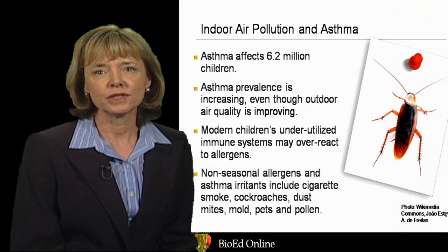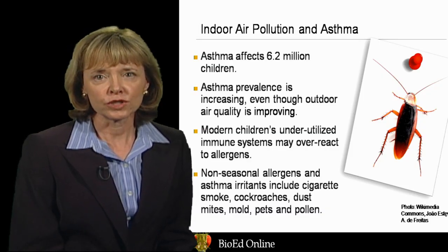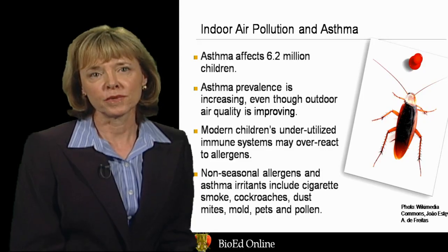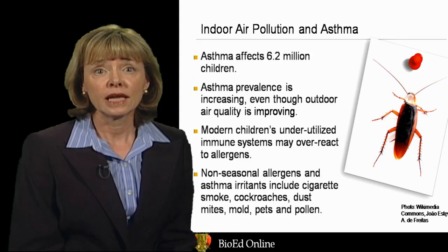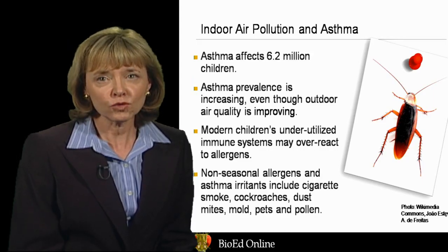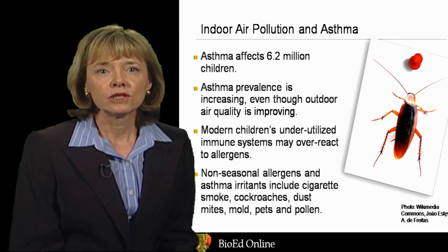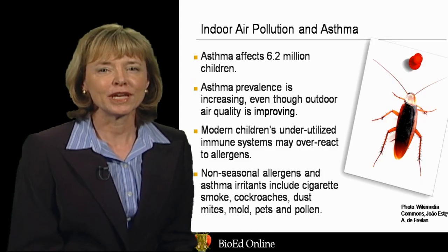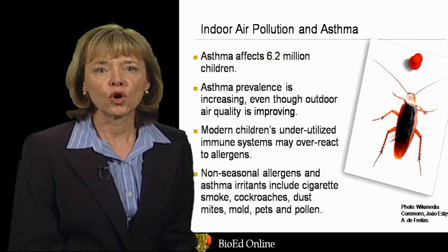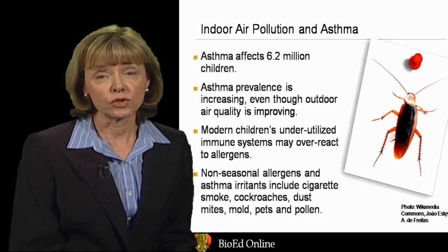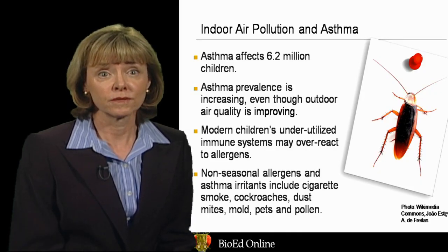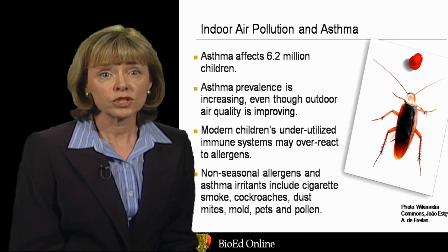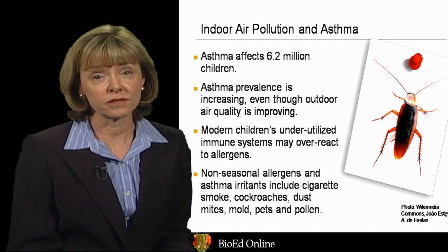Surprisingly, our indoor environments are full of toxins, and indoor air pollution is a common environmental health problem. The pollution in our homes can cause asthma, and in fact asthma affects about 6.2 million children. And it's increasing, even though the quality of our outdoor air is actually improving. Some investigators think that modern children's immune systems have not been challenged sufficiently because they live in a basically clean environment, and because of this they overreact when they're exposed to allergens, such as dust produced by cockroaches in buildings. In general, allergens and asthma irritants include cigarette smoke, cockroaches, dust mites, mold, pet dander, and pollen.